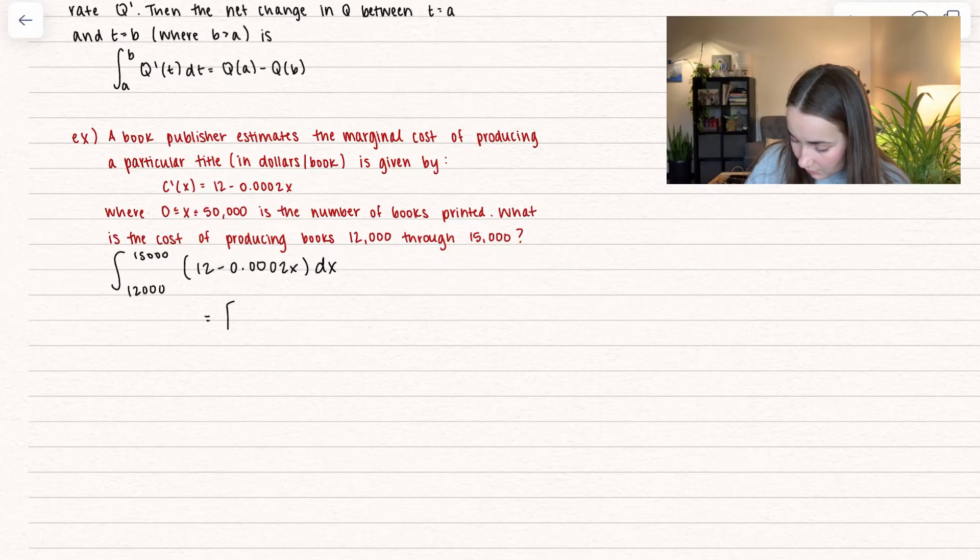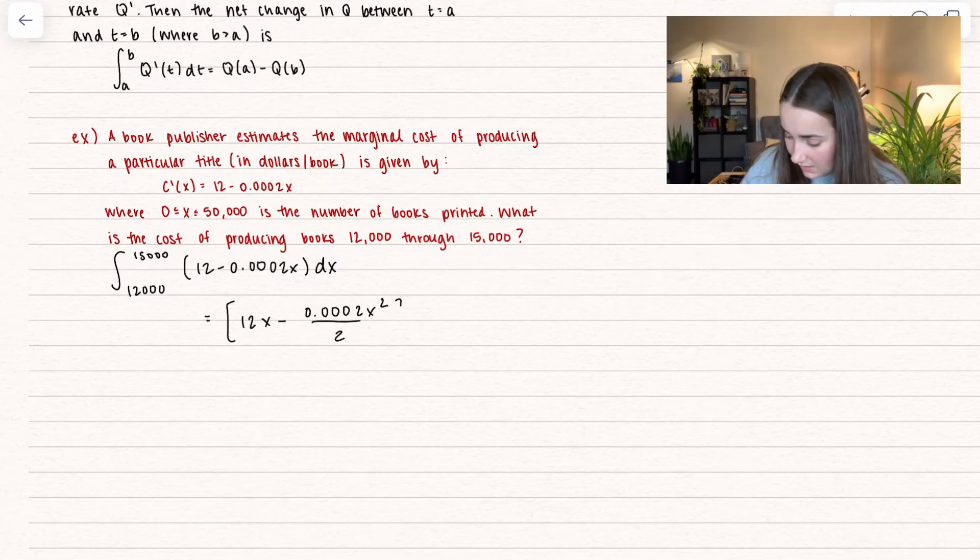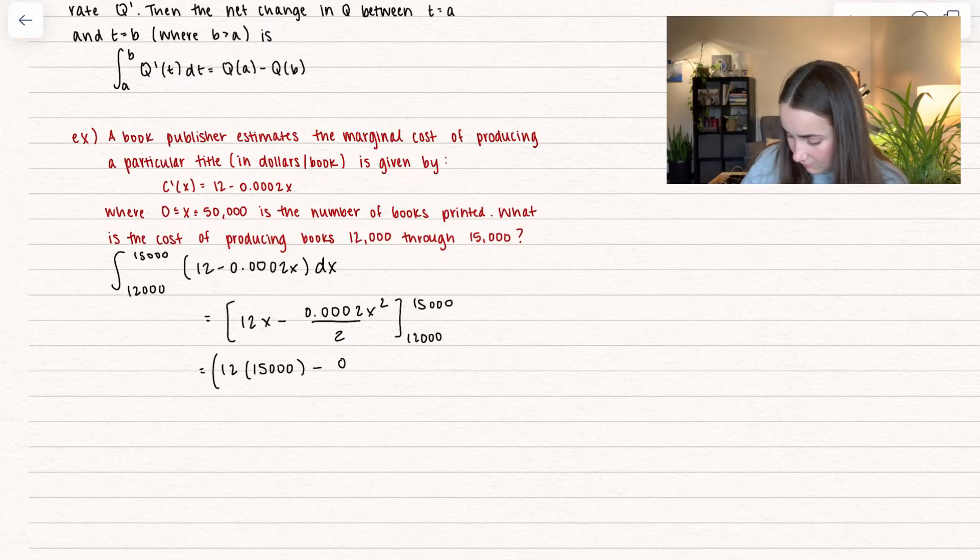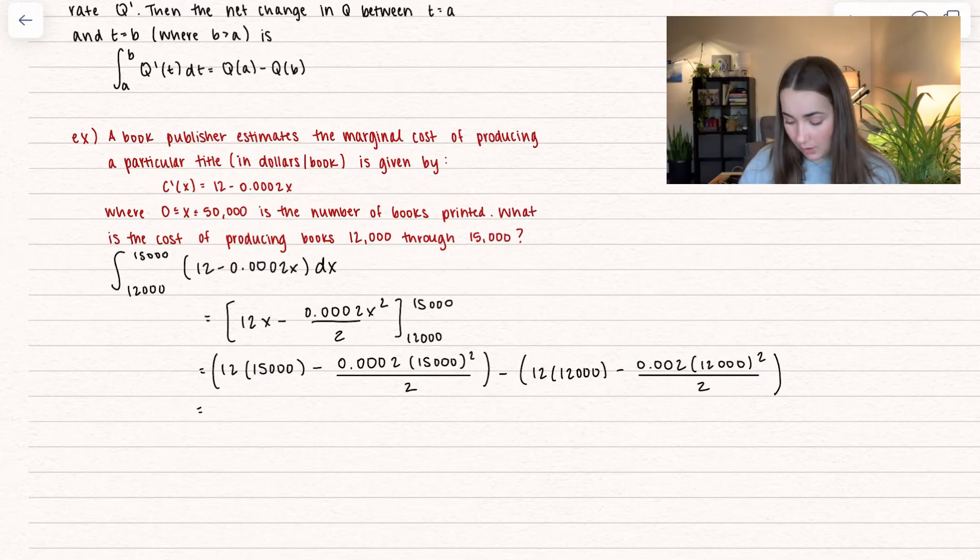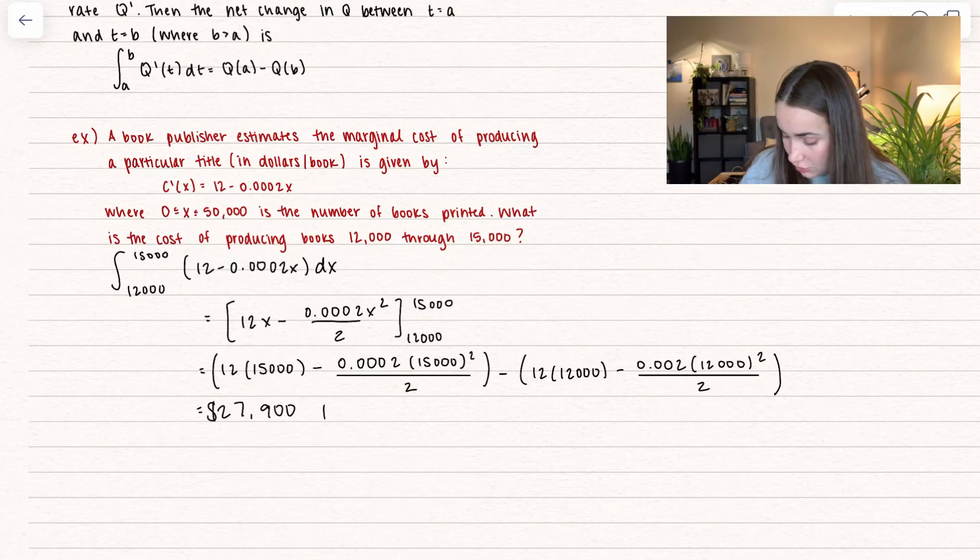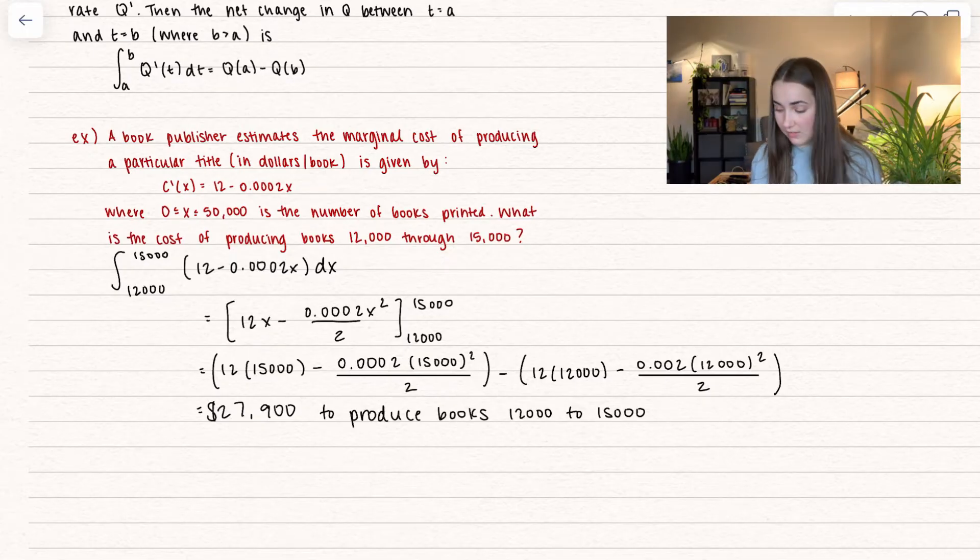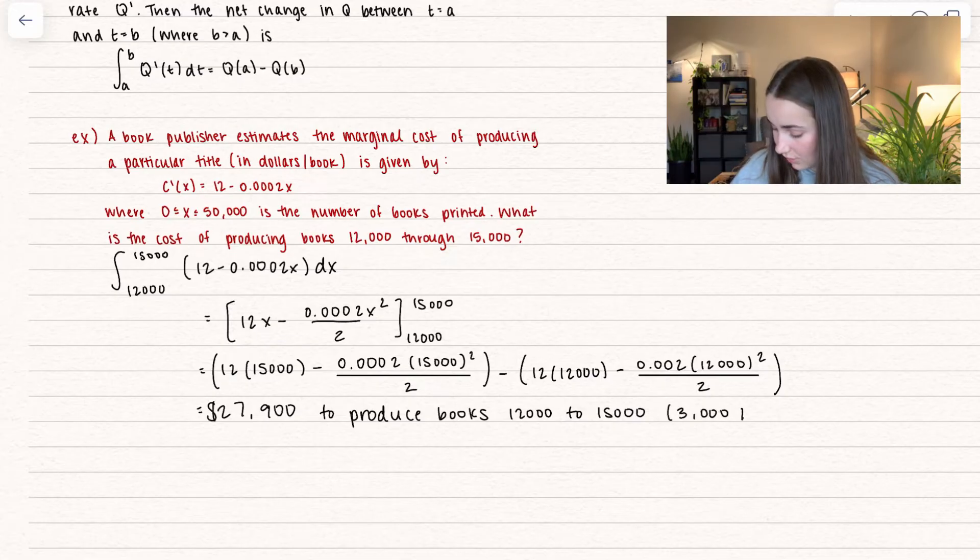So let's find an anti-derivative first. We get 12x minus 0.0002x squared divided by two, and we're integrating between twelve thousand and fifteen thousand. I'll plug in upper minus lower. That's a big calculator problem for sure, but we end up getting $27,900 to produce books twelve thousand to fifteen thousand. So really this is three thousand books.